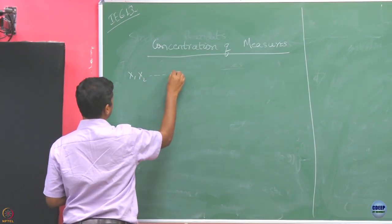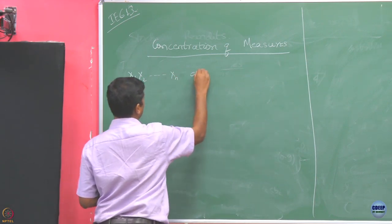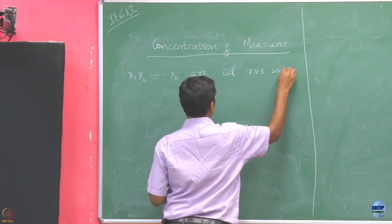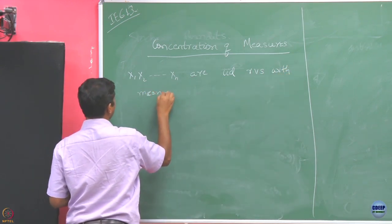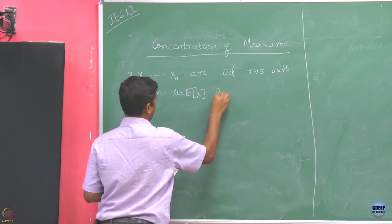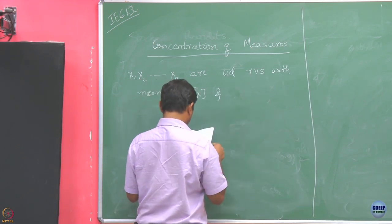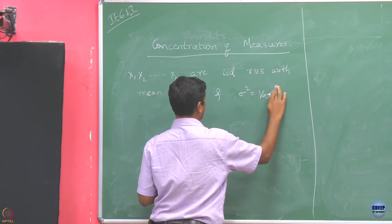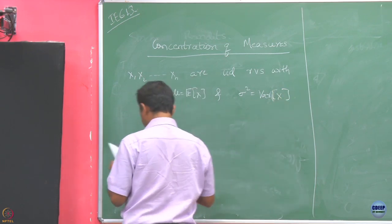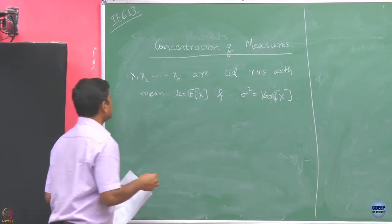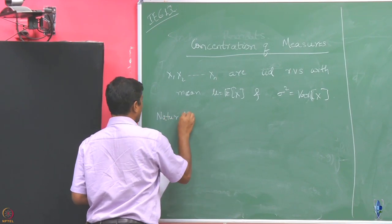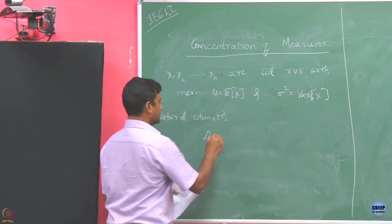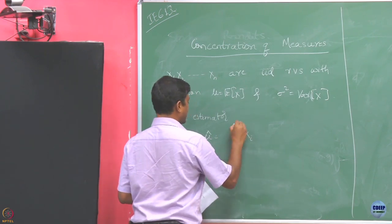Let x₁, x₂, ..., xₙ be IID random variables. The natural estimator for the mean μ is μ̂, the average of the n samples: μ̂ = (1/n) Σᵢ xᵢ.